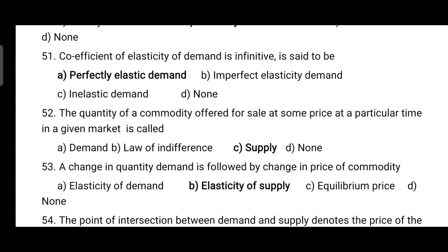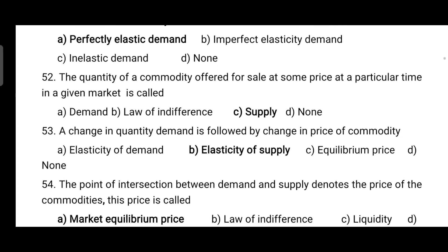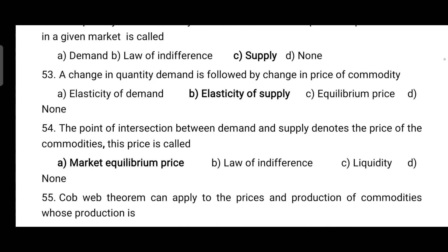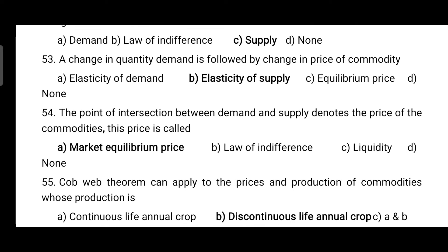When the coefficient of elasticity of demand is infinite, it is said to be perfectly elastic demand. Next, the quantity of a commodity offered for sale at some price at a particular time in a given market is called supply. A change in quantity supplied followed by a change in price of a commodity is known as elasticity of supply.